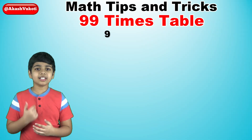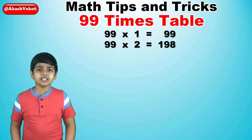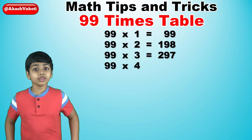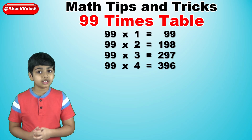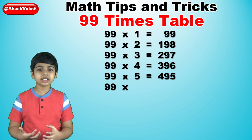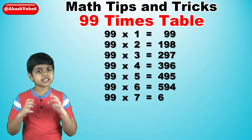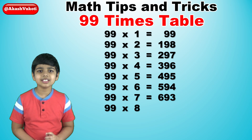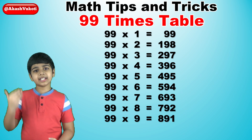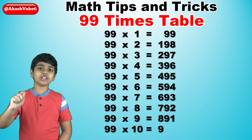99 times 1 is 99, 99 times 2 is 198, 99 times 3 is 297, 99 times 4 is 396, 99 times 5 is 495, 99 times 6 is 594, 99 times 7 is 693, 99 times 8 is 792, 99 times 9 is 891, and finally, 99 times 10 is 990.